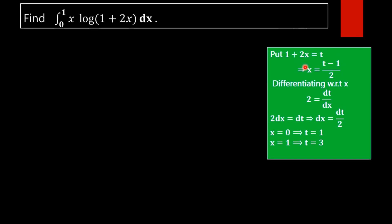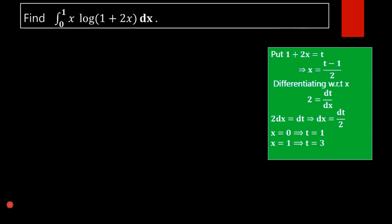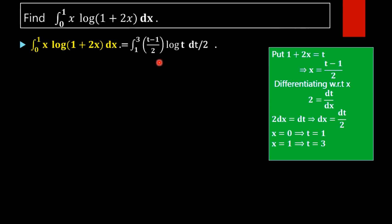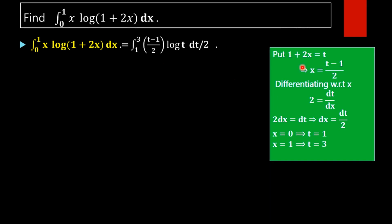What will x be? x equals (t minus 1) divided by 2. Substituting these values, the integral from 0 to 1 of x·log(1+2x) dx becomes the integral from 1 to 3 of (t minus 1)/2 times log(t) times dt/2. The new limits are: when x equals 0, t equals 1; when x equals 1, t equals 1 plus 2, that is 3.